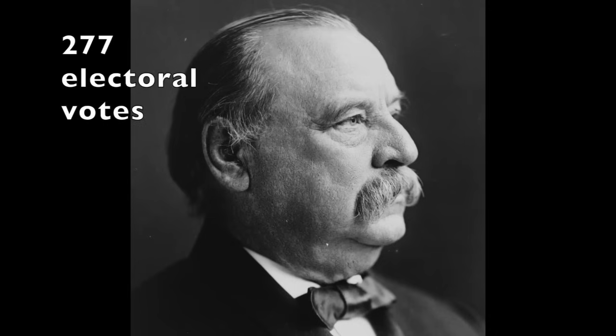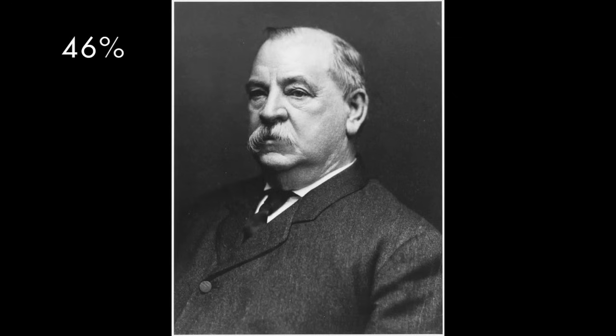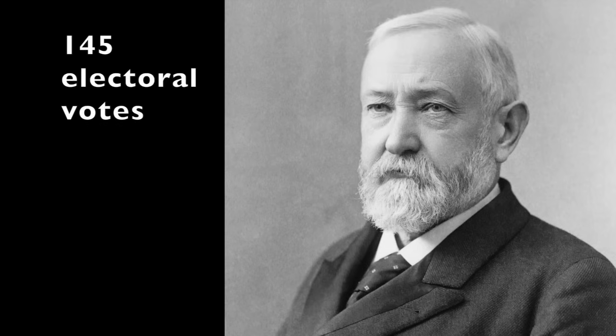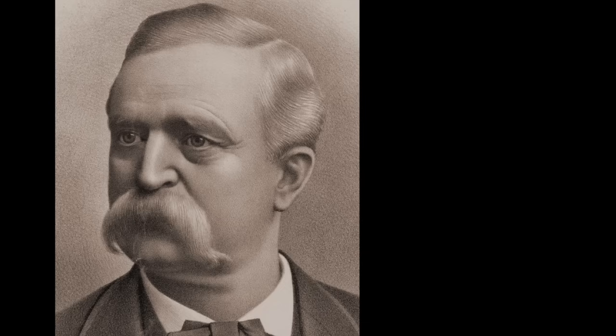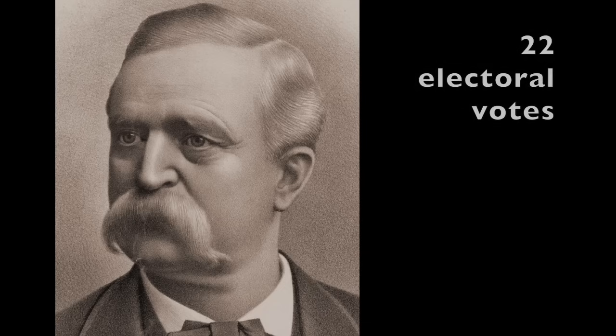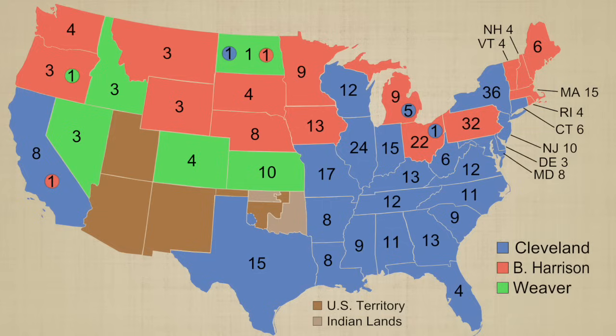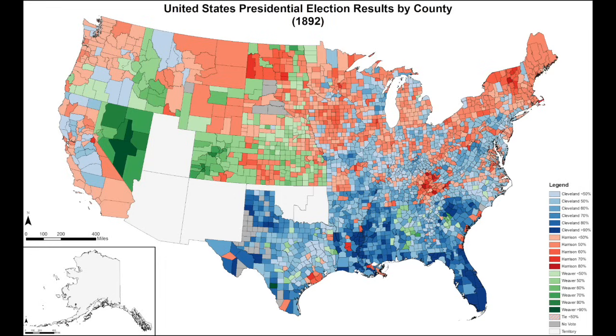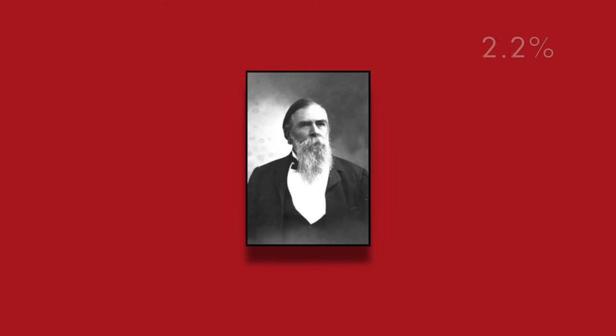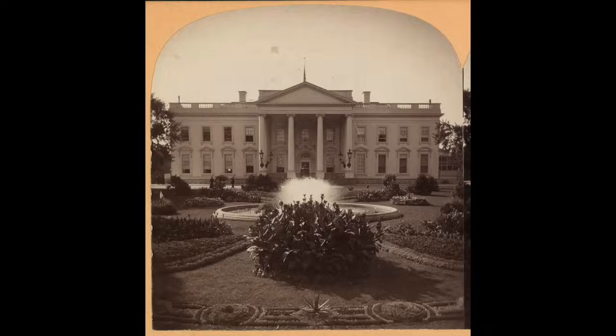Grover Cleveland won, becoming the 24th President in American history. He received 277 electoral votes and 46% of the popular vote, which was actually his worst showing yet. But a win is a win. Benjamin Harrison received 145 electoral votes and 43% of the popular vote. Populist James Weaver finished third with 22 electoral votes and 8.5% of the popular vote. He became the only third-party candidate between 1860 and 1912 to win electoral votes, doing especially well in the West and South. John Bidwell received 2.2% of the popular vote, the best performance by the Prohibition Party yet. All other candidates received less than 1%. Adlai Stevenson became the 23rd Vice President in American history.